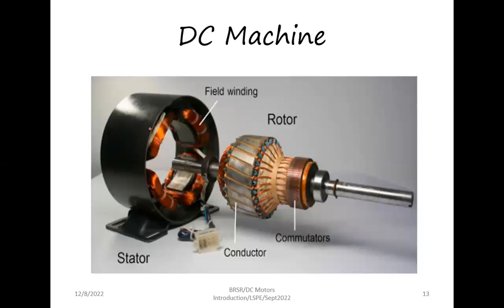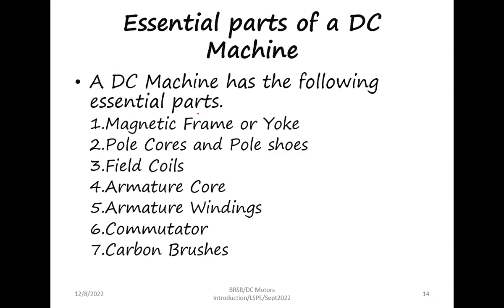The basic parts of a DC machine are: the magnetic frame or yoke, pole cores and pole shoes, field coils, armature core, armature winding, commutator, and carbon brushes. Here you have the stator in which the coil is present; when electricity is provided, they become magnets. This is the rotor which houses the conductors, and we have a part called the commutator.